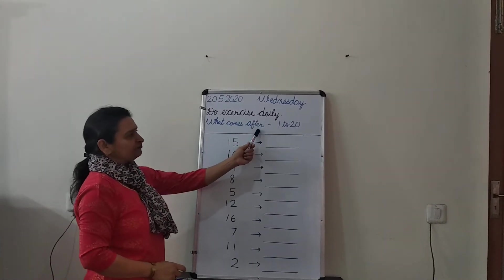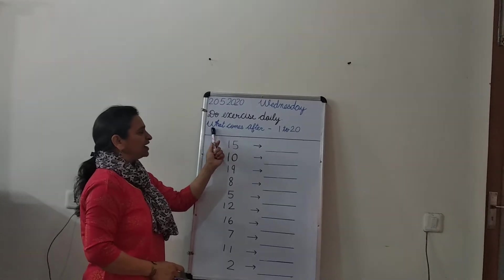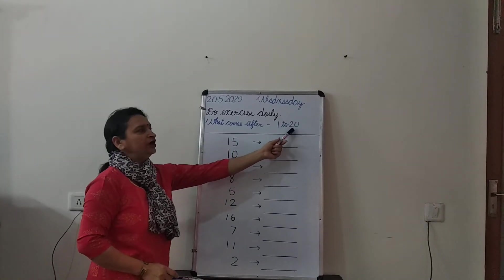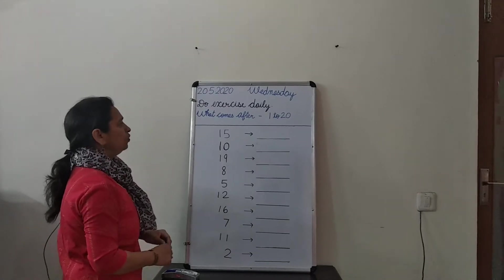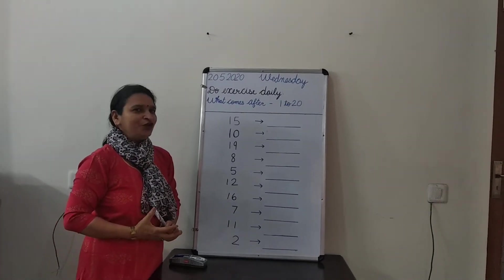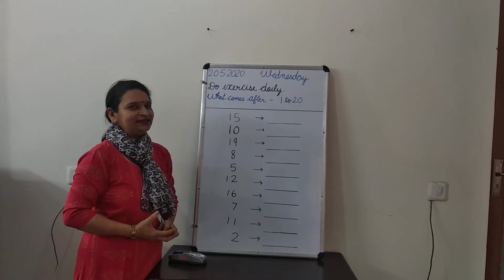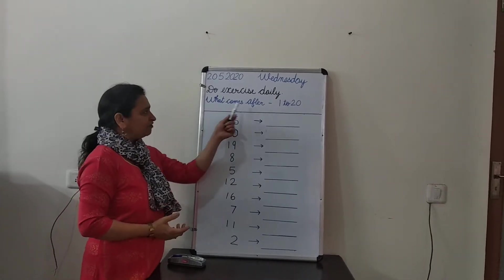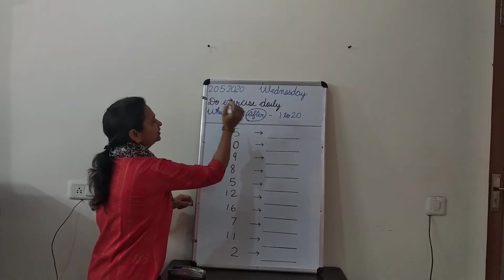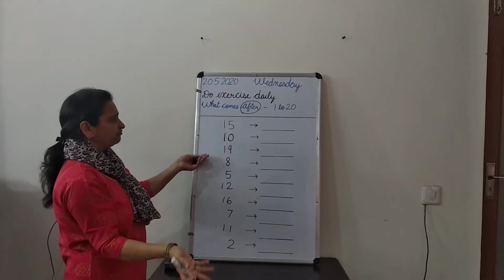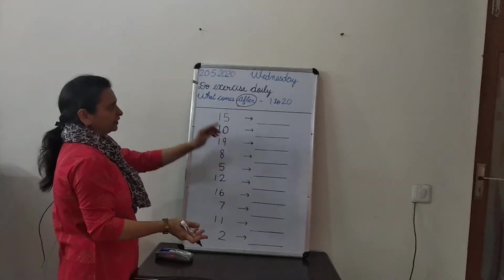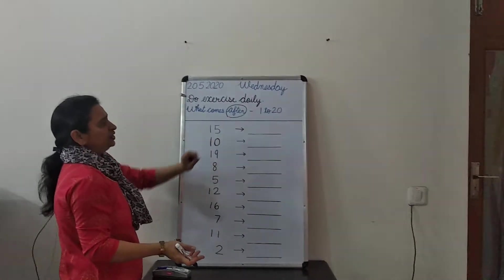Today's topic is maths — what comes after 1 to 20. What is the meaning of 'after'? This is a revision from LKG. After means 'baad mein' — which number comes baad mein, that is called 'after'.